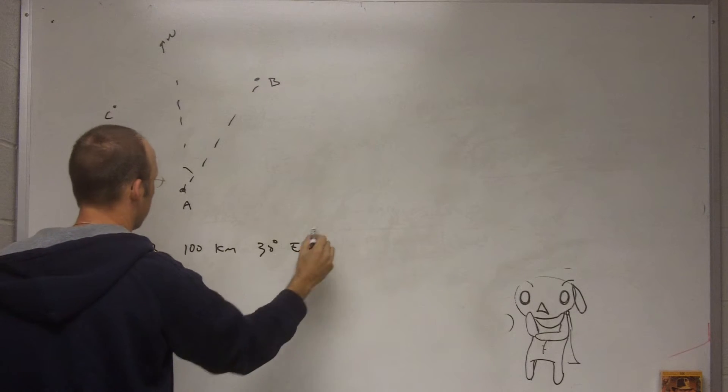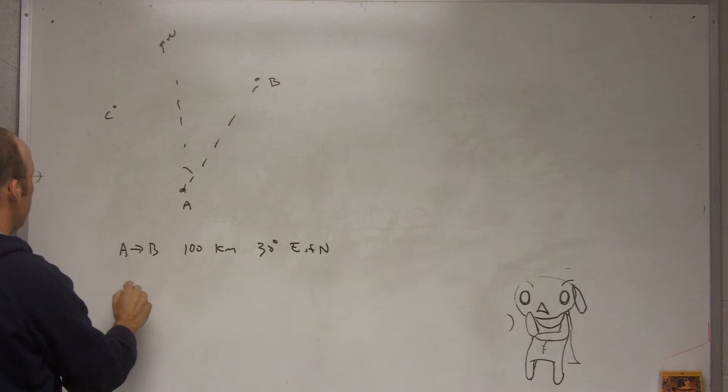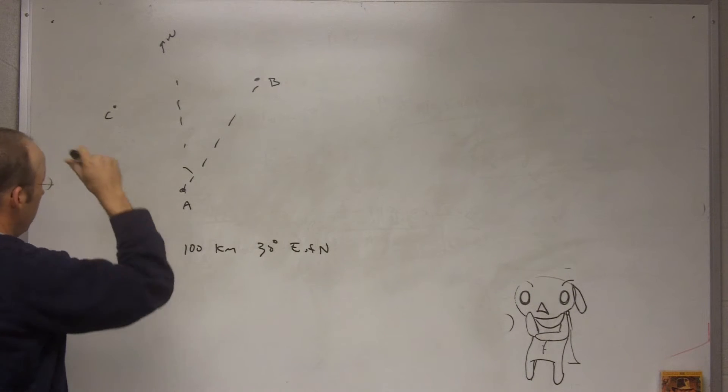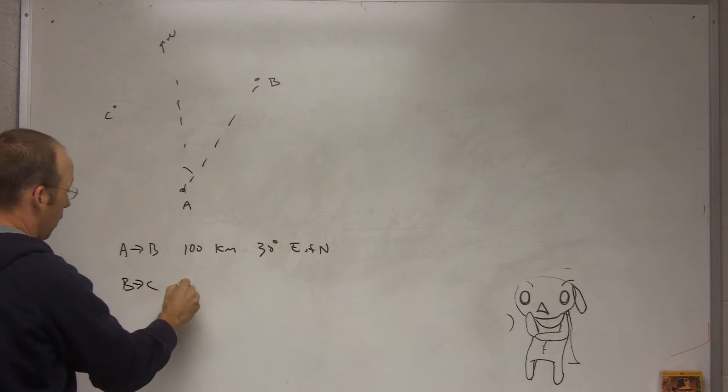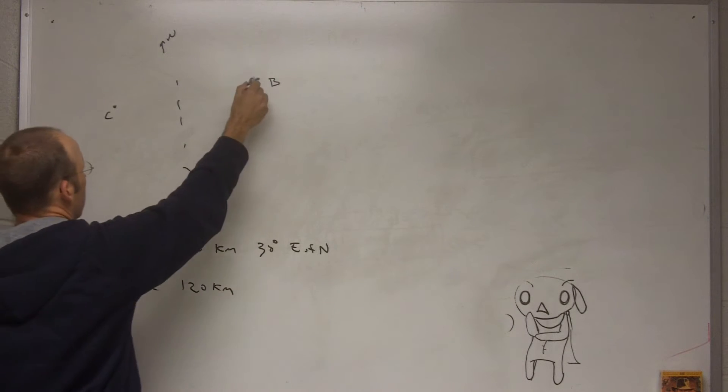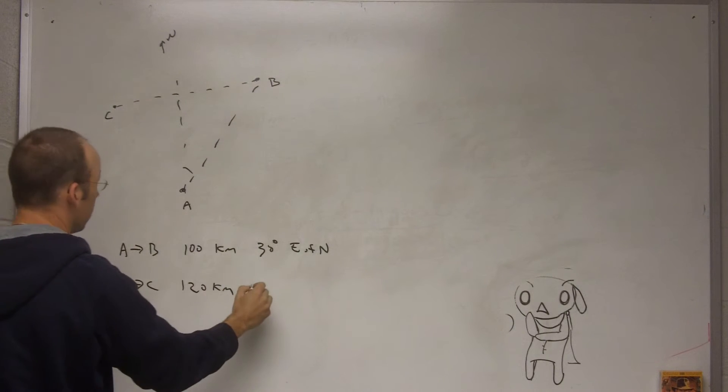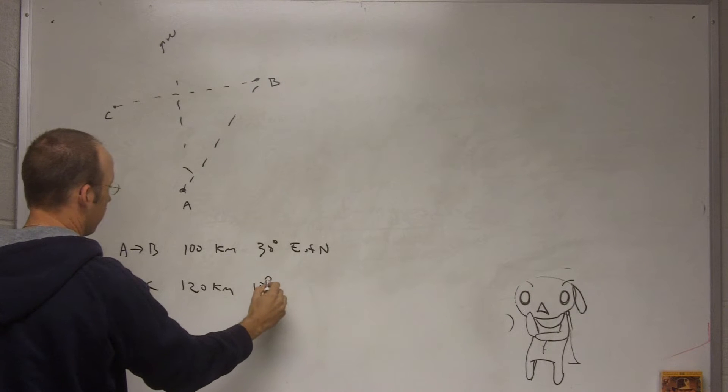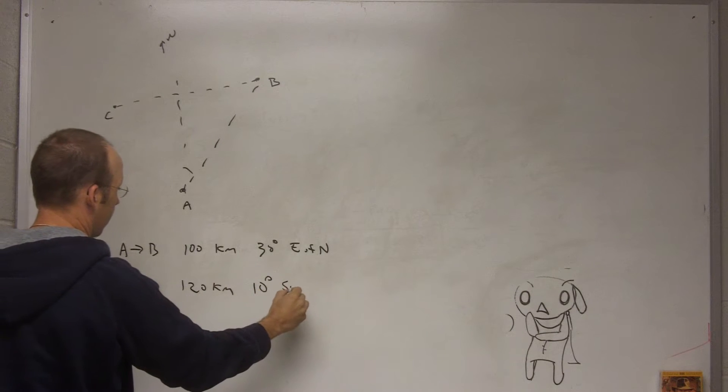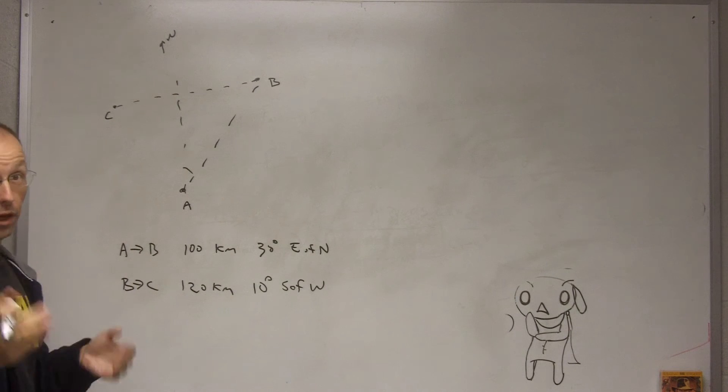And then let's say B to C is, I'm going to say 120 kilometers, and like this. So let's say that's about 10 degrees south of west. So this is something that you might see when you're flying your plane.